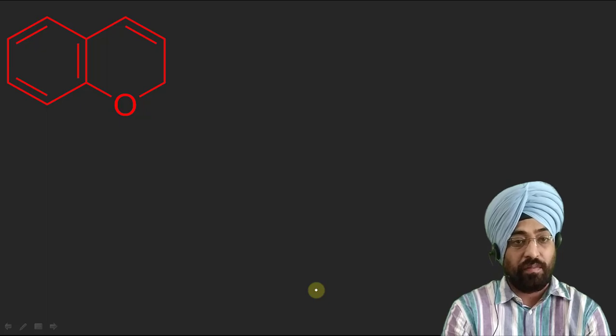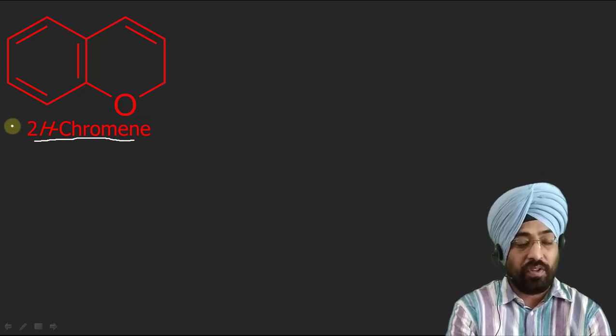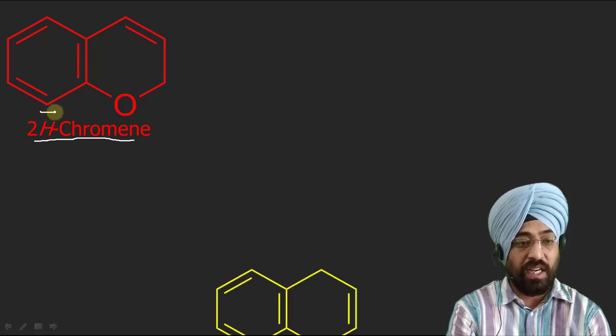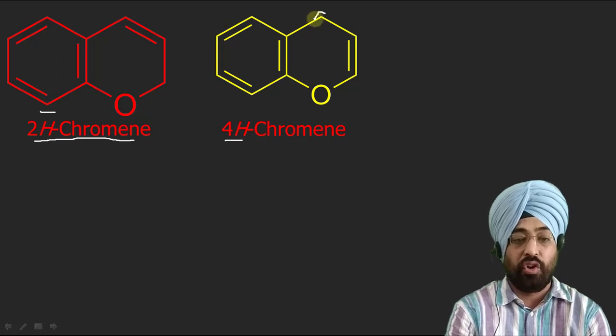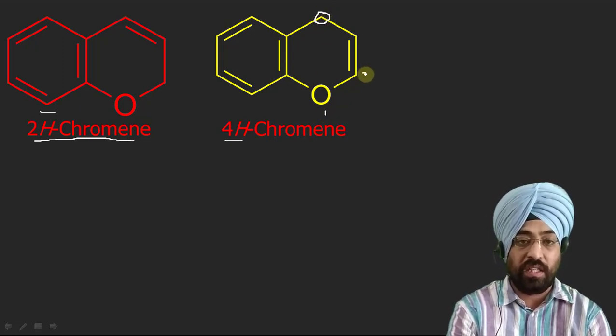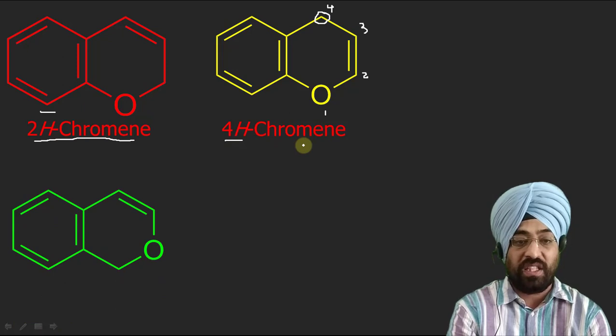Mostly 60–80% of organic compounds are heterocyclic in nature. Even hemoglobin in our blood is a heterocyclic compound. This compound is called 2H-chromene — I used 2H because at position 2 there is a saturated carbon, shown by the indicated hydrogen. This is the second isomer of chromene: it is 4H-chromene because the saturated carbon is at position number 4. The numbering goes 1, 2, 3, 4, so the saturated carbon is at 4, making it 4H-chromene.